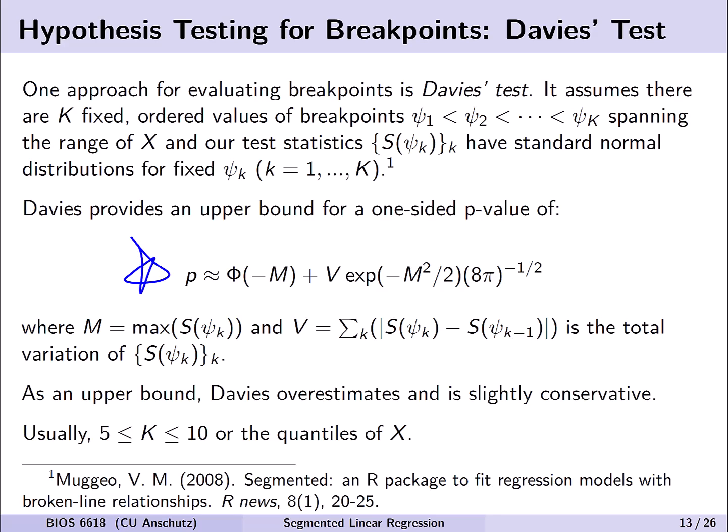You may wonder how to choose k when dividing up the x variable. It's often chosen to be between 5 and 10, where the default in the segmented regression package is 10, or you might choose quantiles of x at specific locations to explore.